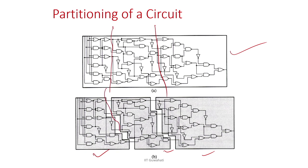Your partition objective is to make cuts at places where the number of crossing wires is minimum. For example, cutting at one place you find four wires crossing, requiring four connections between two blocks. But cutting at a different place yields nine connections. So you need an algorithm that identifies the best cut where the number of wires crossing from one partition to another is minimum.